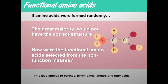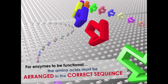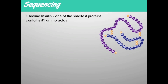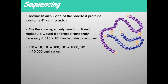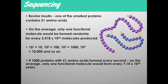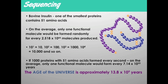In addition to having the proper structure, amino acids have to have the correct sequence in the chain. This is an example of one of the smallest proteins — it only has 51 amino acids. On average, only one functional molecule would be formed randomly for every 2.518 × 10⁶⁶ molecules produced. If you had a thousand proteins with 51 amino acids formed every second, on average you'd only have one functional molecule formed every 7.14 × 10⁵⁵ years. The universe is only approximately 13.8 × 10⁹ years old — so during the life of the universe, you'd probably never have even a small functional protein formed.